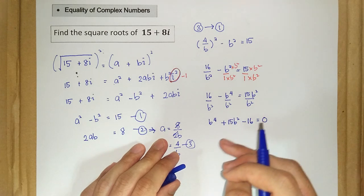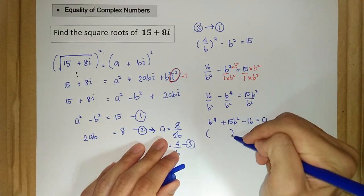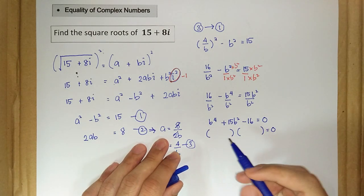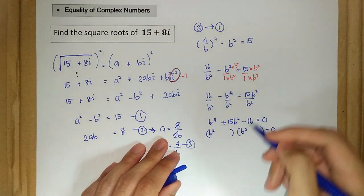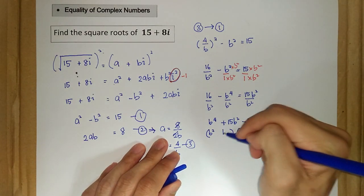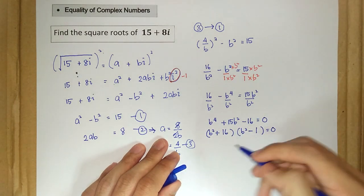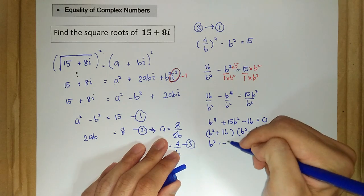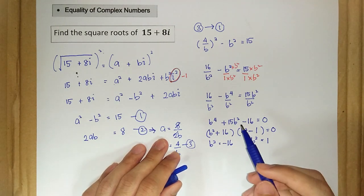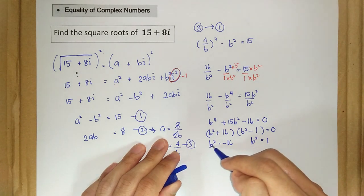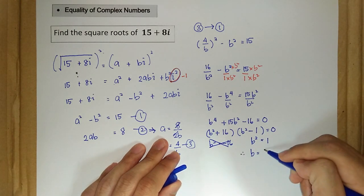We factorize this equation. We get (b squared minus 1)(b squared plus 16) equal to 0. So b squared is equal to negative 16, or b squared is equal to positive 1. Since a and b must be real numbers, we do not include the b squared equals negative 16 option. So we have b squared is equal to 1, and therefore b is equal to plus or minus 1.